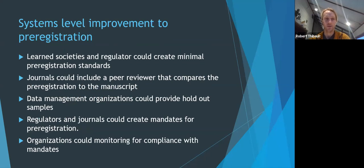then a last few things here so we've mostly talked about what individual researchers can do but there's also system levels improvements that can be done to pre-registration so for example learned societies and regulators could create minimal pre-registration standards which exist in clinical trials in psychology the APA has created a standard template but it's not clear if it gets used very much journals could include a peer reviewer that checks pre-registrations and compares them to manuscripts data management organizations could provide blinded data sets or part of a data set to help people to help researchers create their pre-registration analysis plan with only that data before receiving the full unblinded true data set and a few other things I've listed here